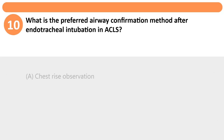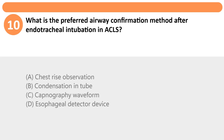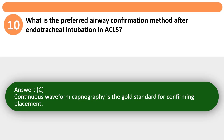What is the preferred airway confirmation method after endotracheal intubation in ACLS? A. Chest rise observation. B. Condensation in tube. C. Capnography waveform. D. Esophageal detector device. Answer: C. Continuous waveform capnography is the gold standard for confirming placement.